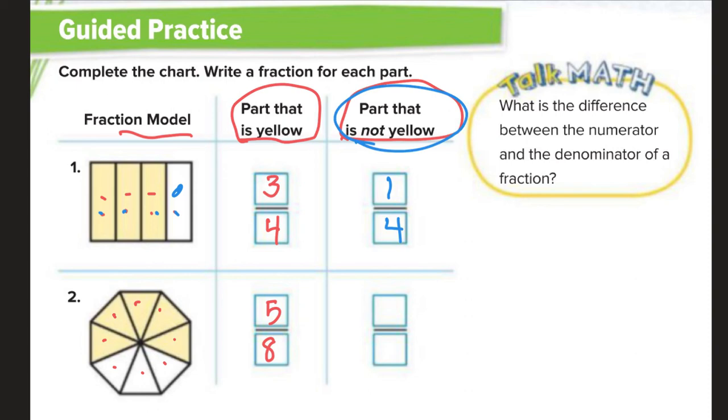Now, the part that is not yellow. One, two, three. Out of, still there are eight pieces, right? We didn't take any away. Three out of eight are not yellow.